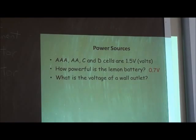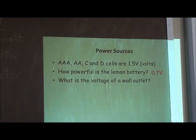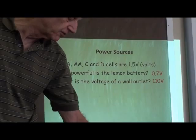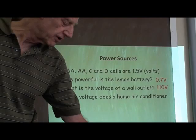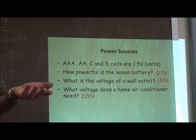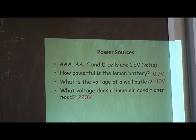But then I ask them about the wall socket. Most of them don't seem to have been aware that there's 110 volts as the household voltage, and I point out right away that this is not something you want to touch — this is a dangerous amount of voltage. Then I ask them about a home air conditioner running on 220 volts, introducing the fact that there's actually 220 volts in their house as well as 110, used for high energy appliances.